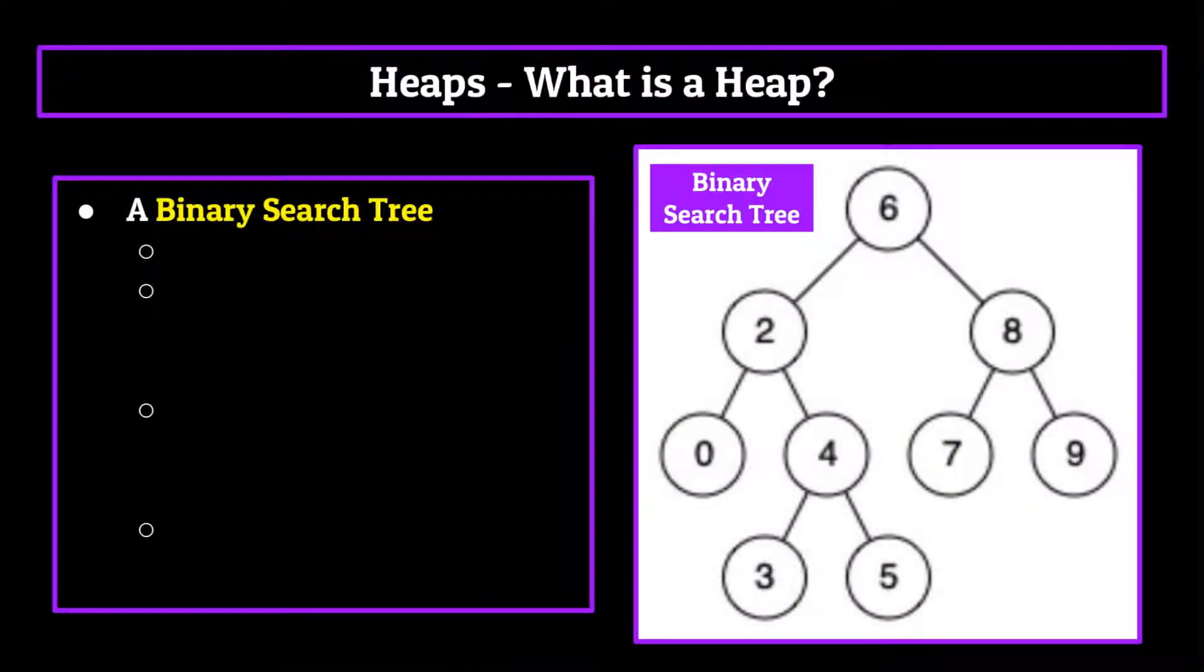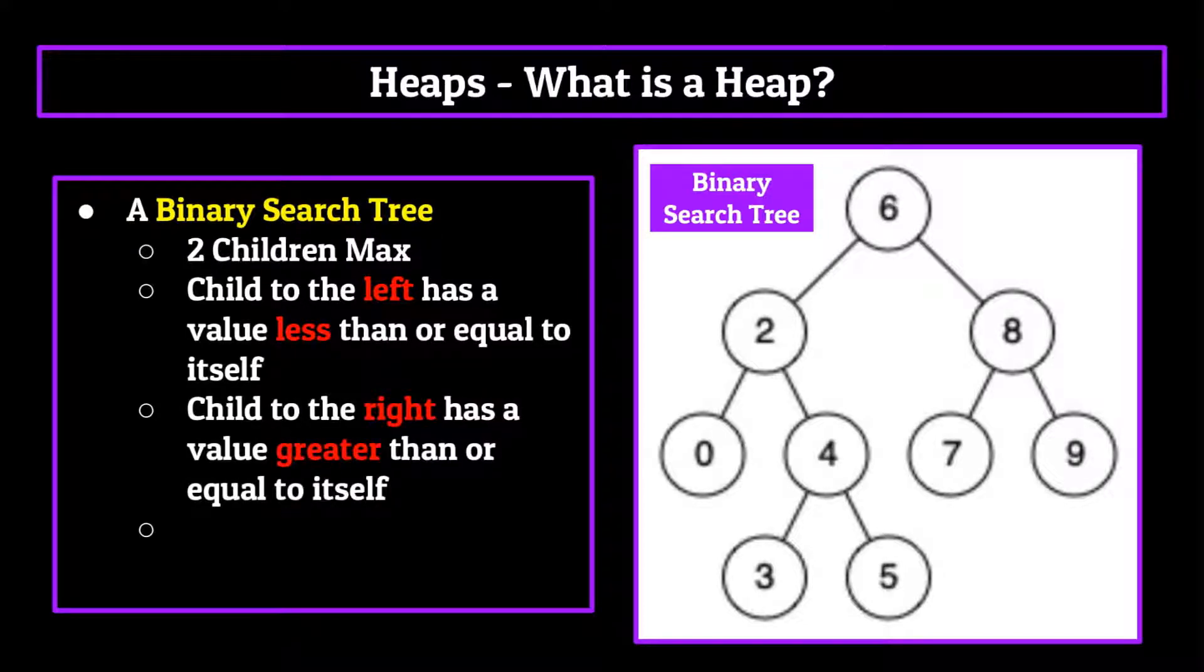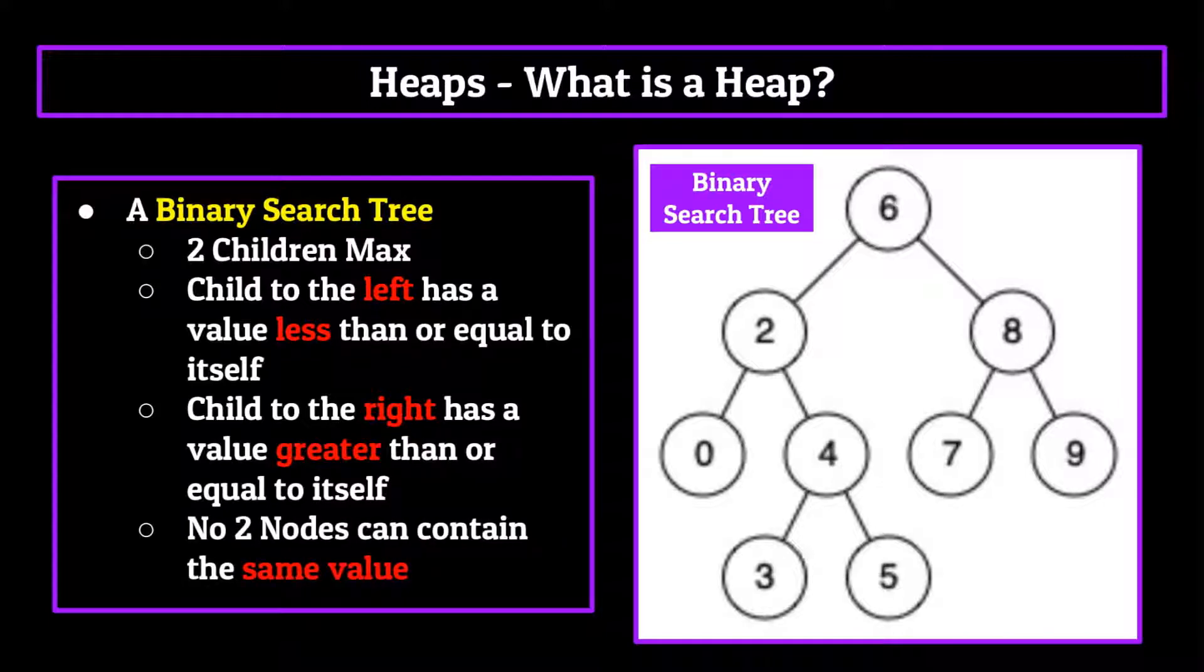Now back in our episode on trees, we talked about the binary search tree, a special type of tree which has a few properties. Each node only has two children, the child to the left must have a value less than the parent node, and the child to the right must have a value greater than the parent node. And finally, no two nodes could contain the same value. We talked about how this was useful because by setting restrictions on where the data could be stored within the tree, it allowed us to search through it at a much quicker rate.